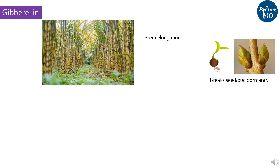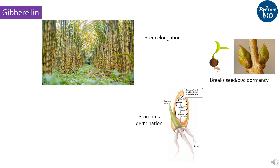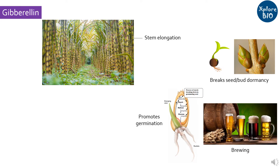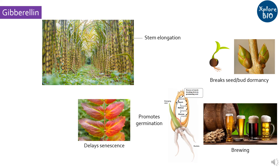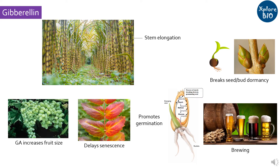In seeds, gibberellin promotes starch conversion to sugar and helps in germination. This makes gibberellin useful for brewing, as it breaks down starch to maltose in barley seeds and others. It delays plant senescence by translocation of metabolites to those sites. Commercial fruit producers spray gibberellin on fruits like grapes to increase their size and fullness.